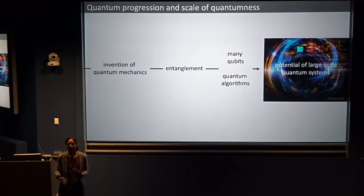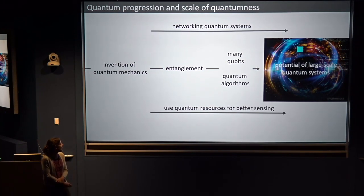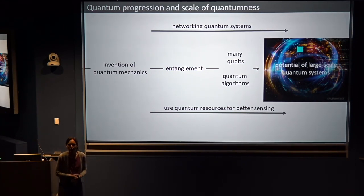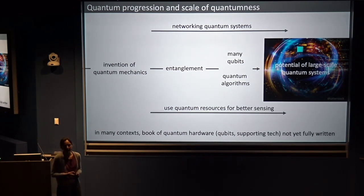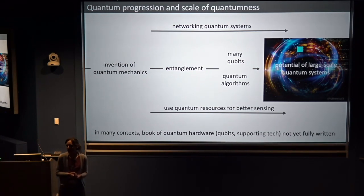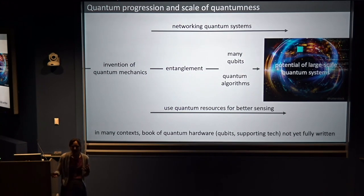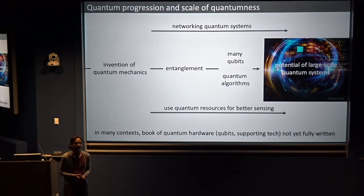There are also many layers of quantum systems from other perspectives. Some things you'll get out of this lecture include looking at ways we can use quantum resources for better sensing or measurement, and how we can network different quantum systems together. I sort of believe that the book of quantum hardware is not yet fully written. From the perspective of making a universal quantum computer, there are many different qubit platforms being pursued — roughly five different platforms even in industrial settings.